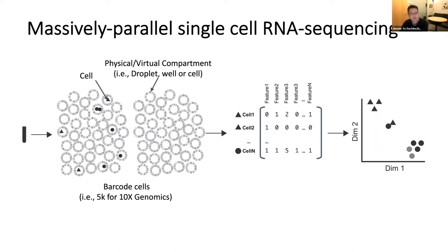In droplet single cell sequencing, encapsulation is governed by a Poisson process. For most droplets to contain only an individual cell, the majority of your droplets must actually be empty — that reduces the probability that two cells are simultaneously encapsulated. For a standard 10x Genomics assay, the target is sequencing 5,000 to about 10,000 cells at a collision rate of about 5%.